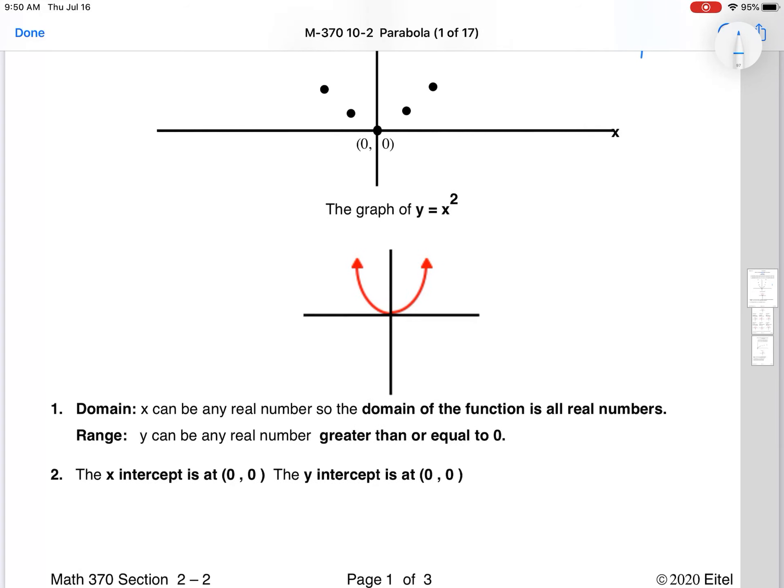You know its domain is the set of all real numbers and that its range is any number greater than or equal to 0. The x-intercept and y-intercept is the same, 0,0, in the graph of x squared. So we really care about where that 0,0 is going to move to.